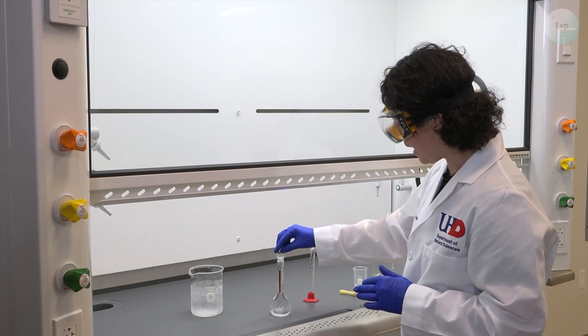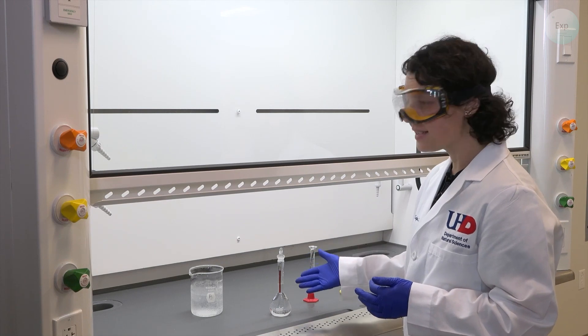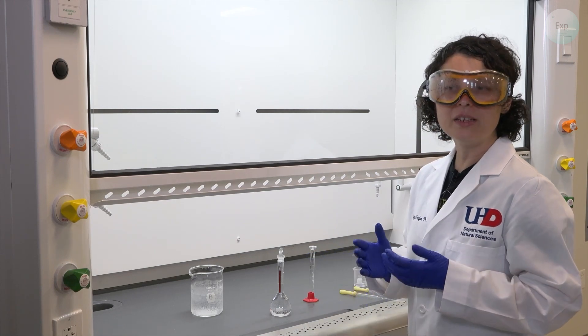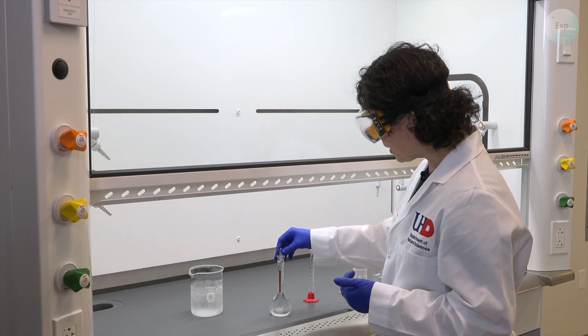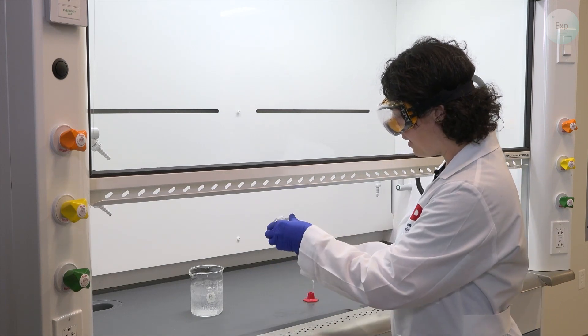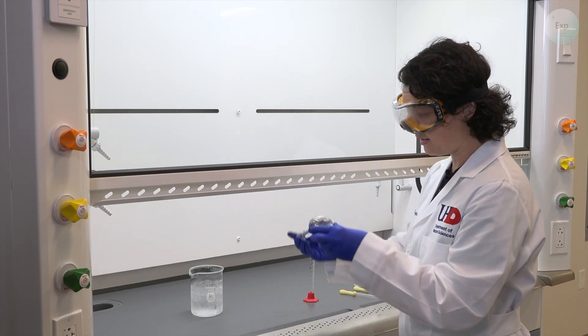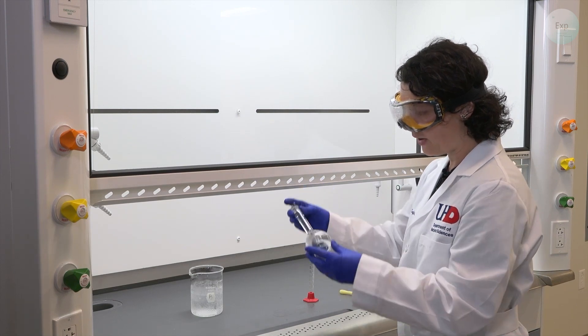We have the right amount of solute and the right volume of solution inside our volumetric flask. The only thing that's missing is for this solution to be homogeneous. And for that, we're going to place the cap on top and then move it side to side, up and down about three to five times.